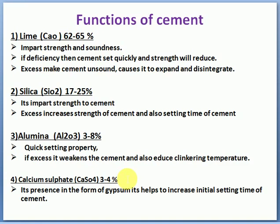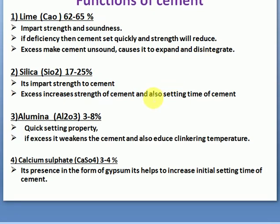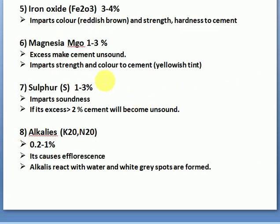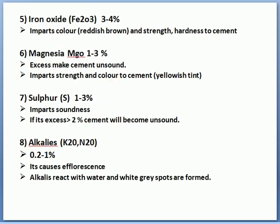Calcium sulphate (CaSO4) in the form of gypsum — 3 to 4%. It helps to increase the initial setting time of cement. It is the reverse of alumina's effect. If you do not add gypsum, after adding water the cement will set suddenly. Since we need time for application — half an hour to one hour — we add calcium sulphate in the form of gypsum at 3–4%.